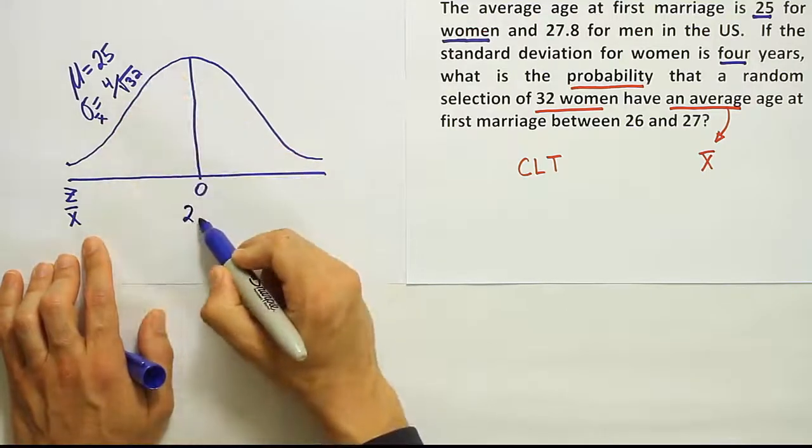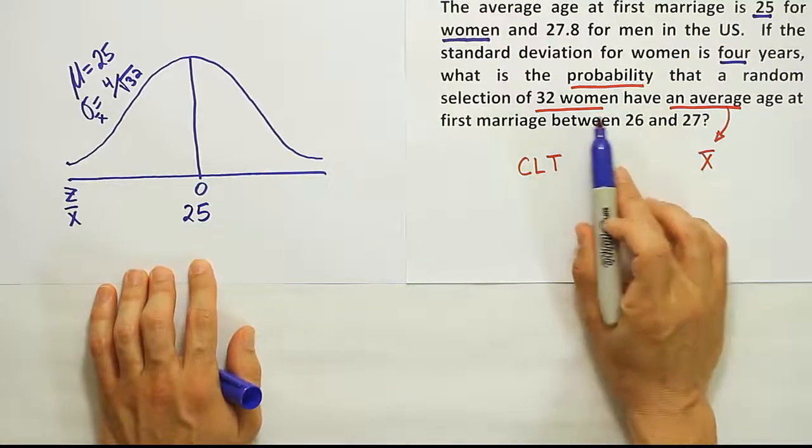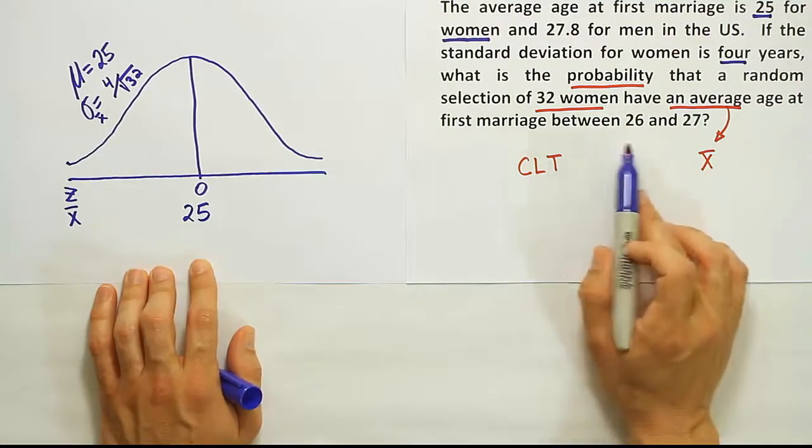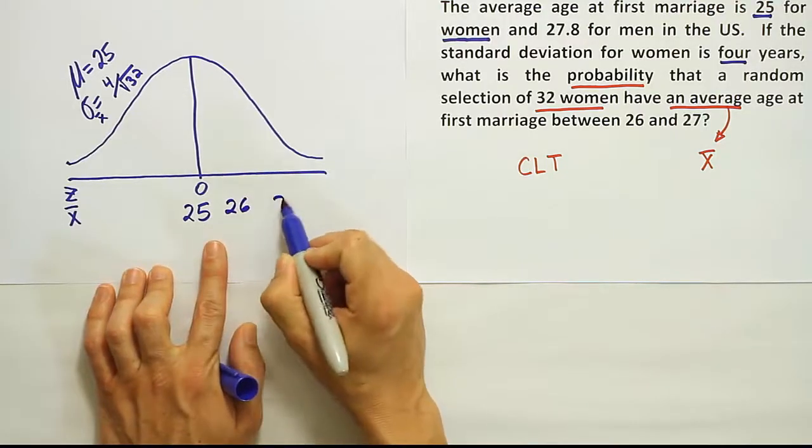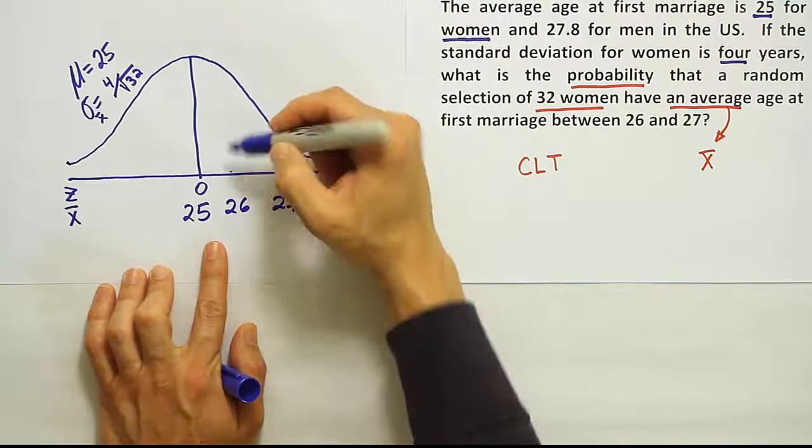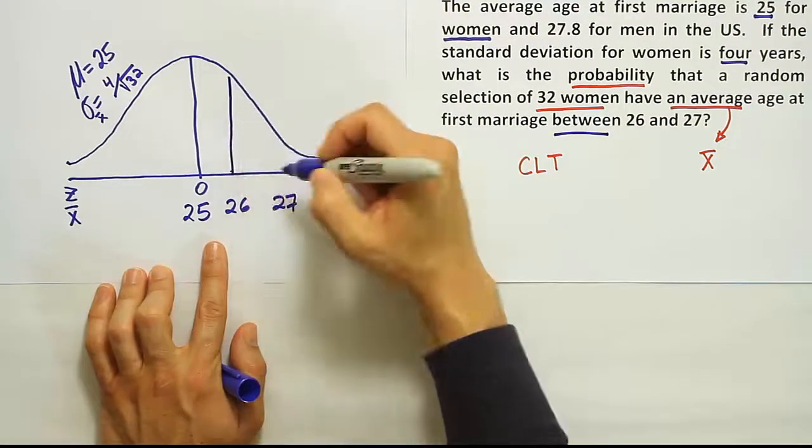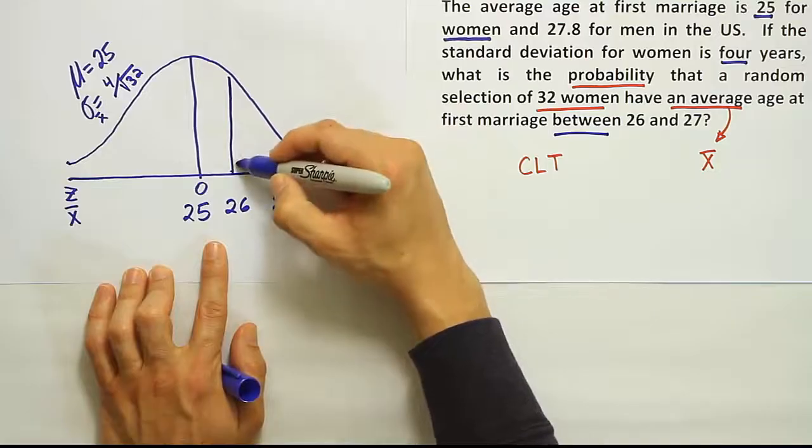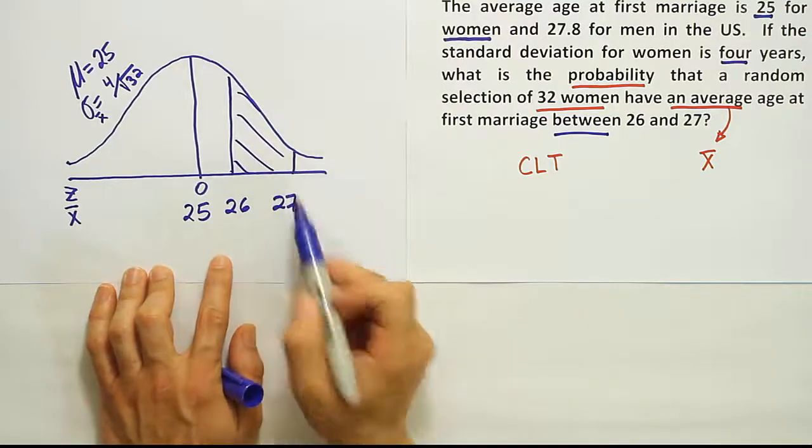And that's going to change things, of course. So the mean is at 25, and then we're going to put the two numbers they asked about. The probability that women will have an average age at first marriage between 26 and 27. So 26 is on the right of 25, 27 is on the right of that, and we're talking about between those two numbers. So I'm going to draw lines on the curve where those numbers exist and then shade in between to represent the area that I'm looking for.